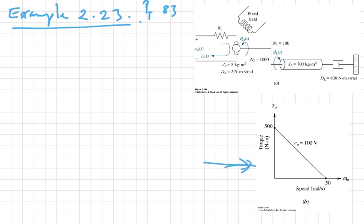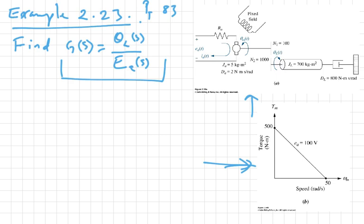This is for this system and you are asked to find the transfer function: find G(s) = θ_L(s) / E_A(s). So this is what you'd like to find. The first step is we solve for the mechanical part, so we look at the mechanical part which is this part. First, solve for the mechanical part.